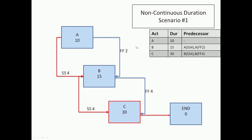Let us take this network — we have 3 activities A, B, C with durations 10, 15, and 30. We are now going to do the forward pass: 0, 10, and then as we come back here we have the next activity. The early start of B is 4 and B goes to 4 plus 15 which is 19; from 10 plus 2 we are going to 12. So 19 controls, giving us 4 and 19, and then we go to C.